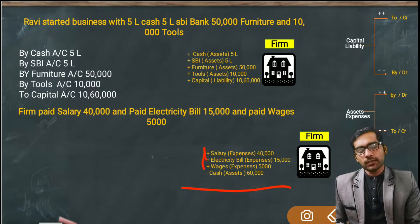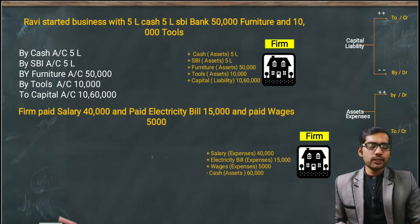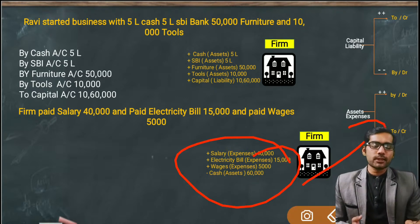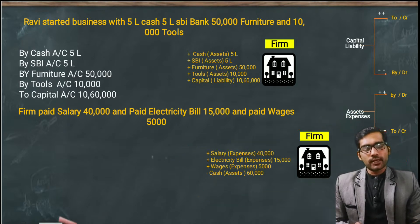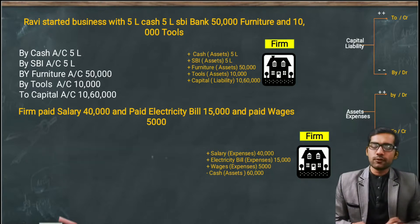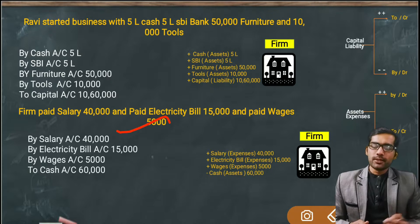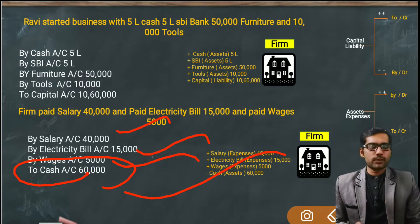Three expenses increased and one asset (cash) decreased. Converting to journal entries: expenses and assets when they increase are debited (Buy/Dr). So: Dr Salary Account 40,000, Dr Electricity Bill Account 15,000, Dr Wages Account 5,000, and Cr Cash Account 60,000. To clear all these bills, total cash of 60,000 went out from the firm.